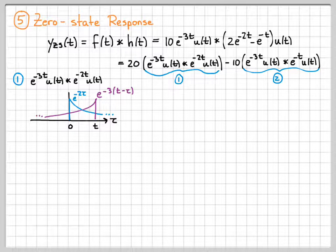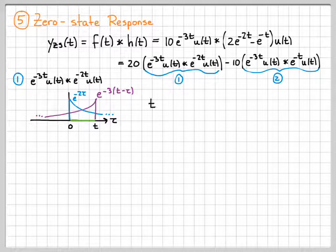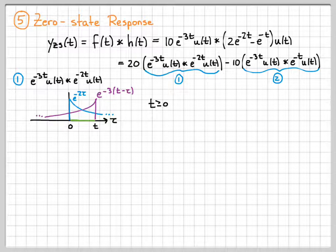This is where it turns off at time t. And that's important, because depending on the value of t, I may or may not have any overlap. When t is less than zero, I obviously have no overlap because it turns off over here and their product is zero. When t is greater than or equal to zero, they overlap right here in the green. They overlap from zero to t.